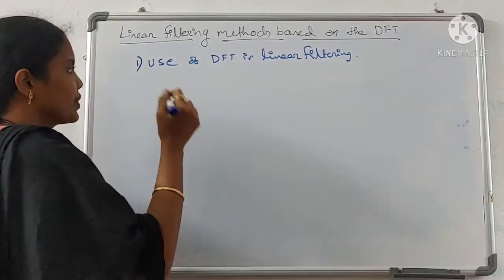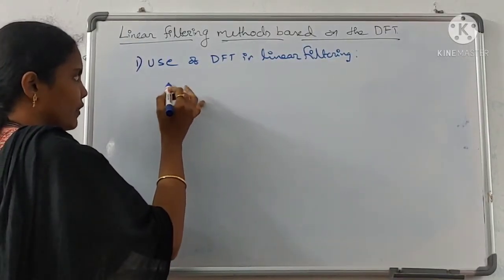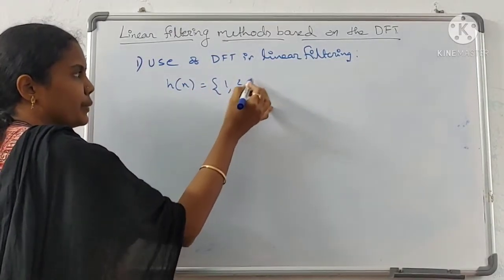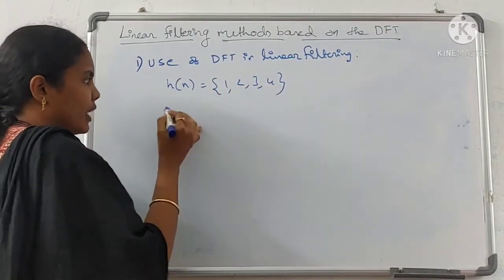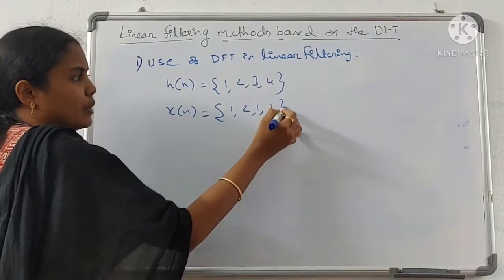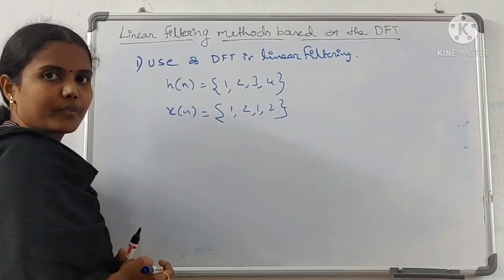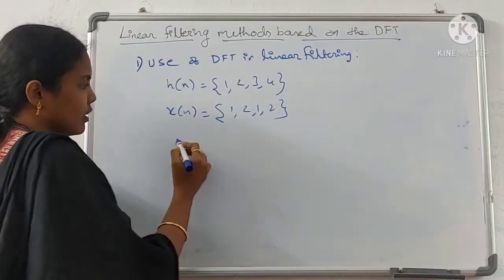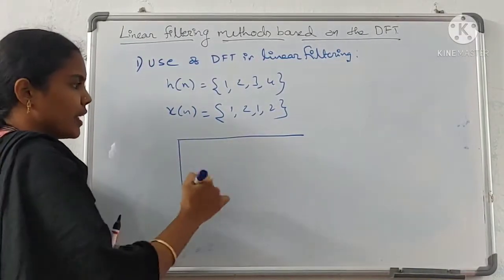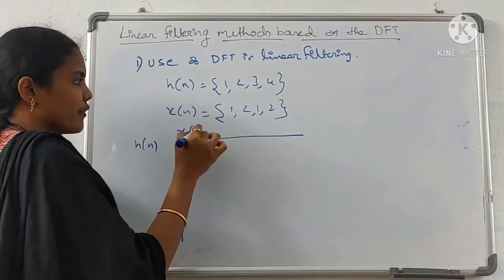Linear convolution: for example, H(n) = {1, 2, 3, 4} and x(n) = {1, 2, 1, 2}. To perform linear convolution, draw two lines — this is H(n) and this is x(n).